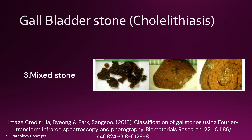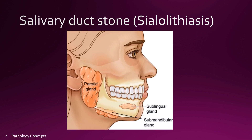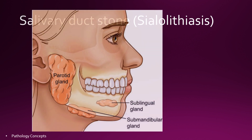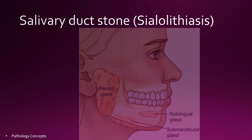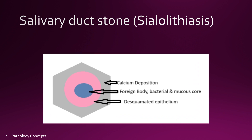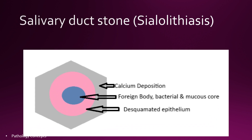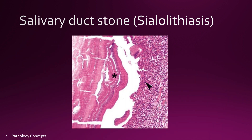The mixed stone has a rough surface with laminated cross section. The last type is salivary duct stone, also called sialolithiasis. The main site of salivary stone formation is the submandibular gland, followed by the parotid and sublingual gland. The formation of salivary gland calculi results from deposition of calcium salts around a core made up of desquamated epithelial cells, foreign bodies, bacteria, and mucous. Salivary gland calculi are of laminal structure.